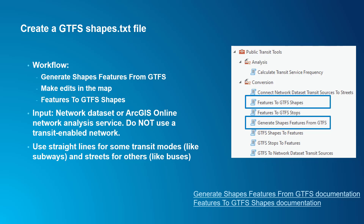The Generate Shapes Features from GTFS and Features to GTFS Shapes tools allow you to create a new shapes.txt file based on the stop, route, and schedule information from an existing GTFS dataset. The first tool uses the Network Analyst Extension Route Solver to generate good estimates for the geographic paths used by vehicles in the transit system. You can get the estimated shapes as a feature class, edit it in the map, review and edit those line features before exporting them to a new shapes.txt file.